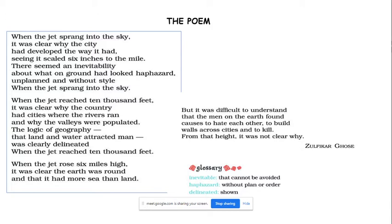Seeing it scaled six inches to the mile means one mile now looks like six inches as we go up — a mile is like six inches to the author from the flight. As the flight went up, the author had a clear idea of why the city has developed so haphazardly. A mile has decreased into six inches in the eyesight of the poet.